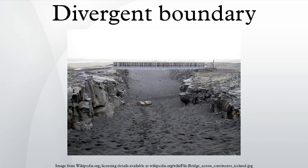In plate tectonics, a divergent boundary or divergent plate boundary is a linear feature that exists between two tectonic plates that are moving away from each other. Divergent boundaries within continents initially produce rifts which eventually become rift valleys. Most active divergent plate boundaries occur between oceanic plates and exist as mid-oceanic ridges. Divergent boundaries also form volcanic islands, which occur when the plates move apart to produce gaps which molten lava rises to fill.